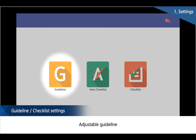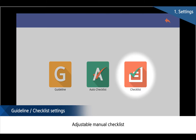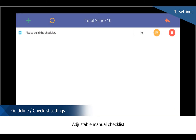Prior to training, the existing guidelines can be corrected and edited at setting, and it is possible to make customized evaluation criteria to enable assessment depending on the execution of the skill procedure after making a checklist.